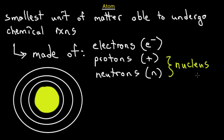Generally speaking, the nucleus is going to be positively charged, because neutrons are neutral and don't counteract the positive charge of the protons. So inside the nucleus we have positive charges and neutrons, making it positively charged overall.